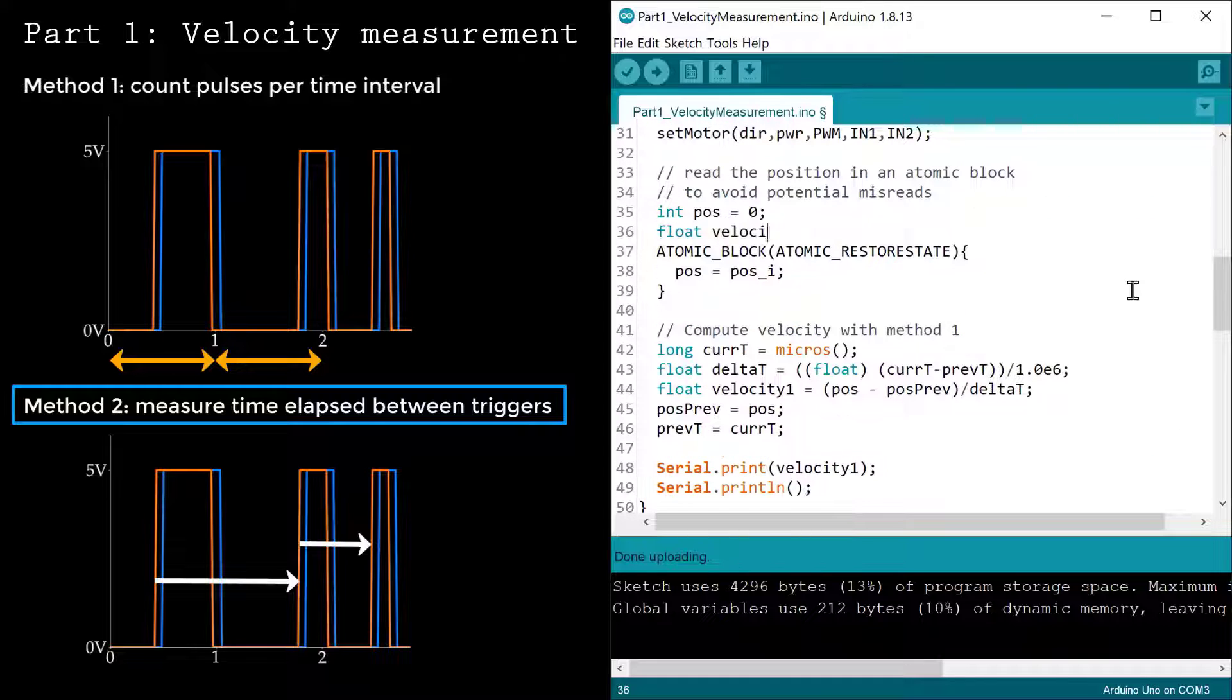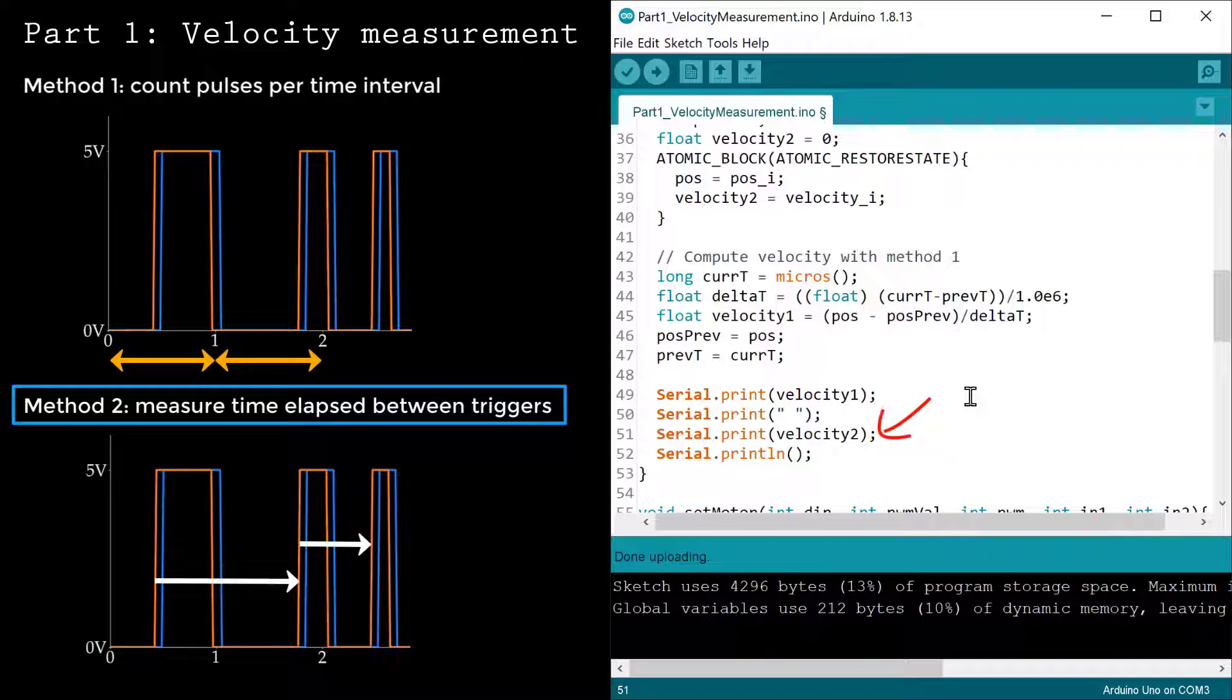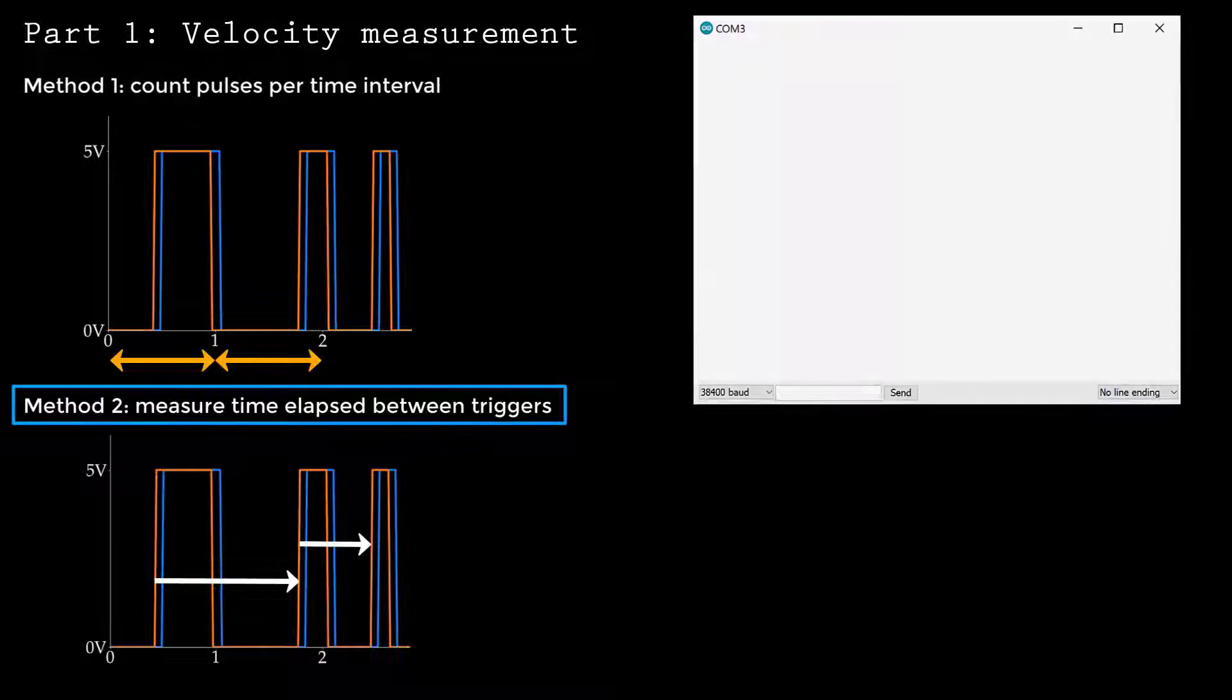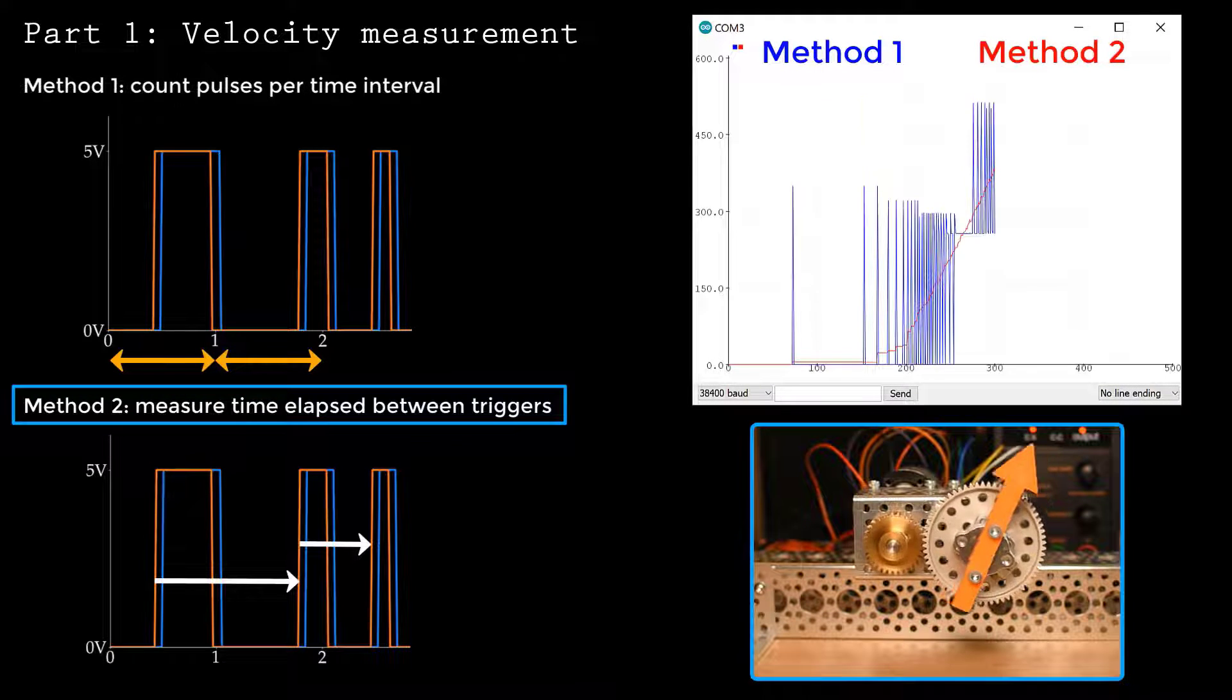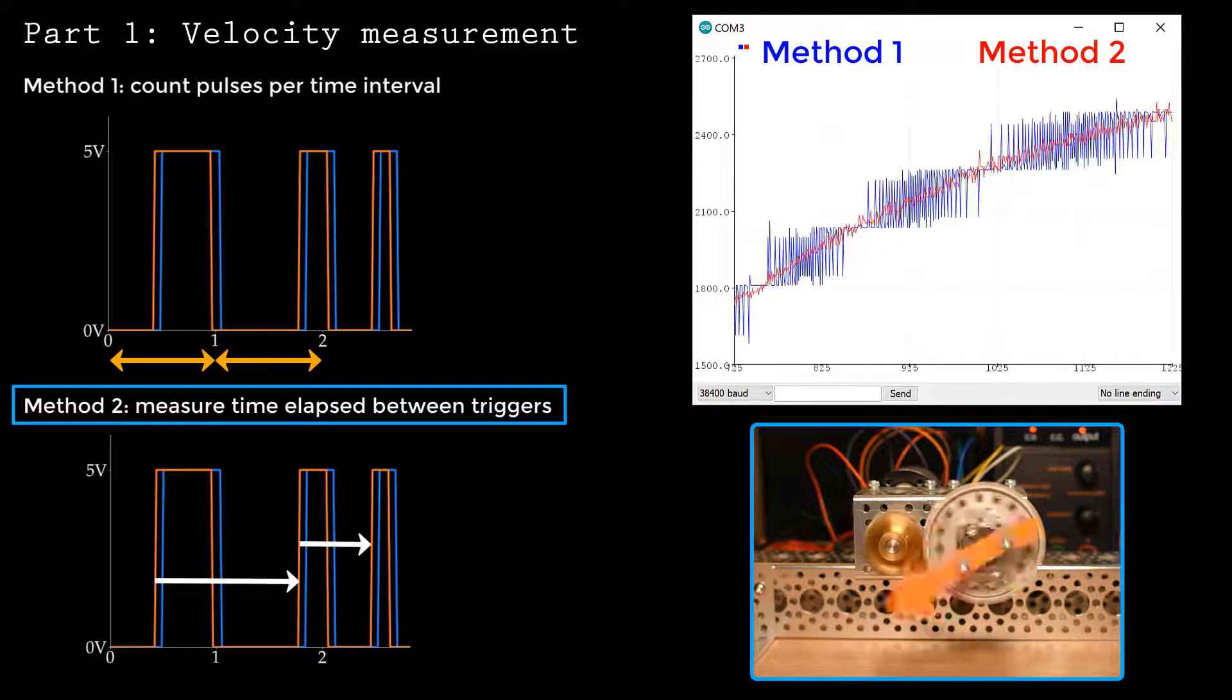Safely retrieving the estimated velocity in the atomic block and writing the estimated speed to the serial port completes this part of the code. Let's test it. You can see that this second method provides a smoother estimate for the speed. However, it can cause other issues later on. But we'll get to that.